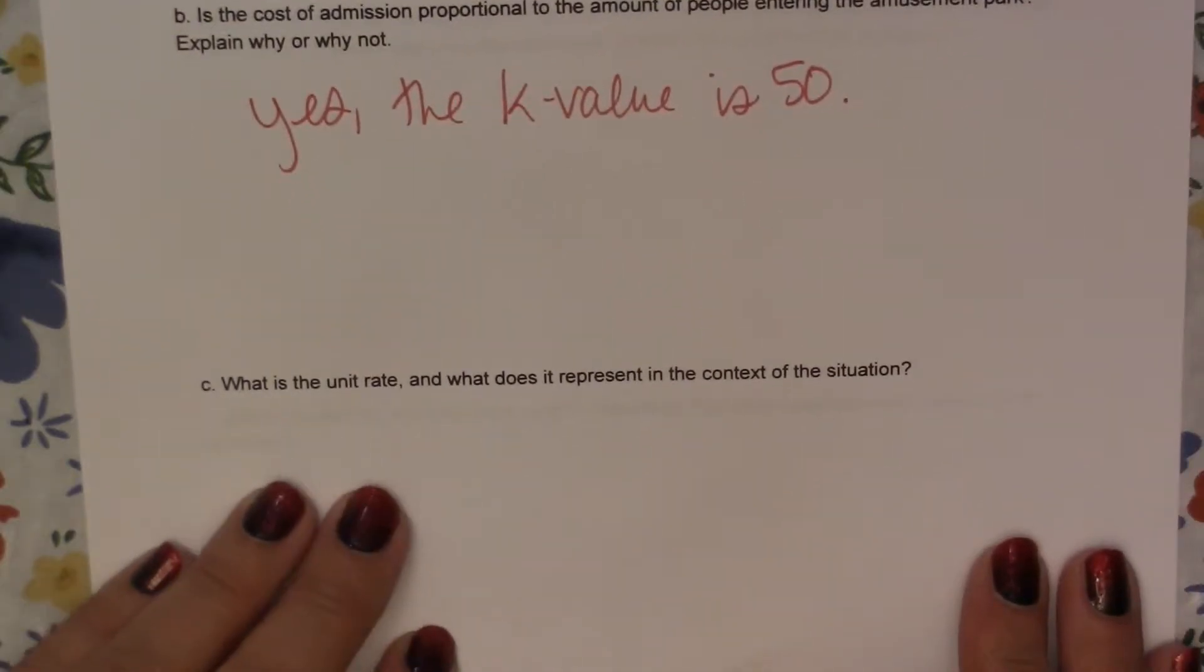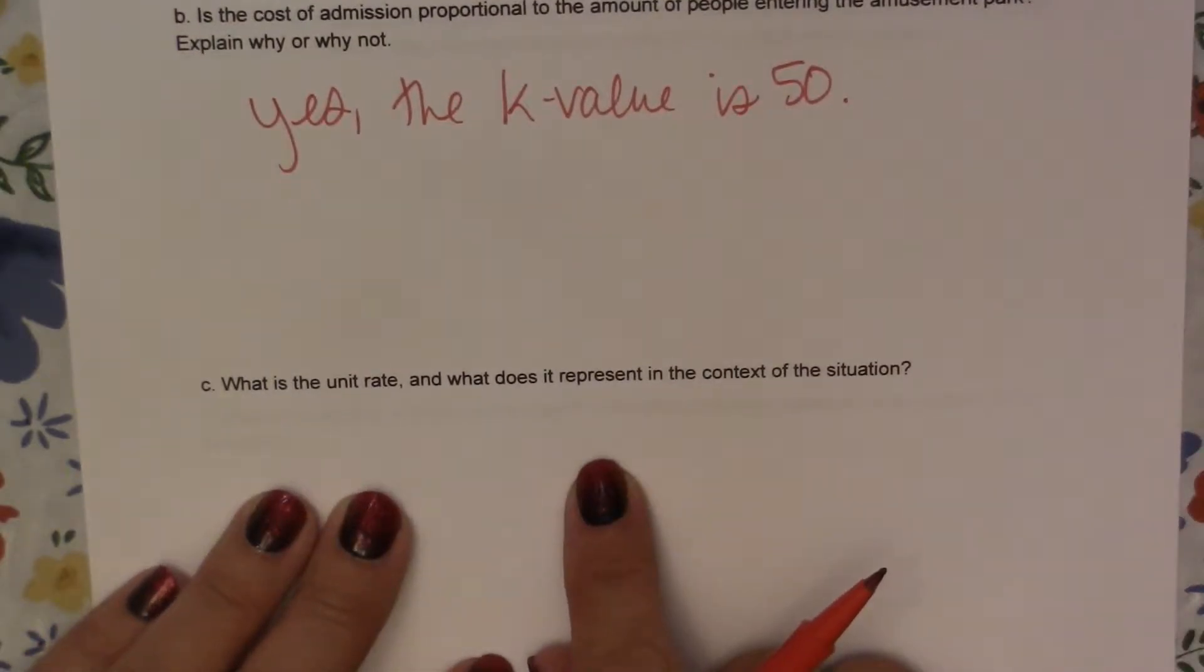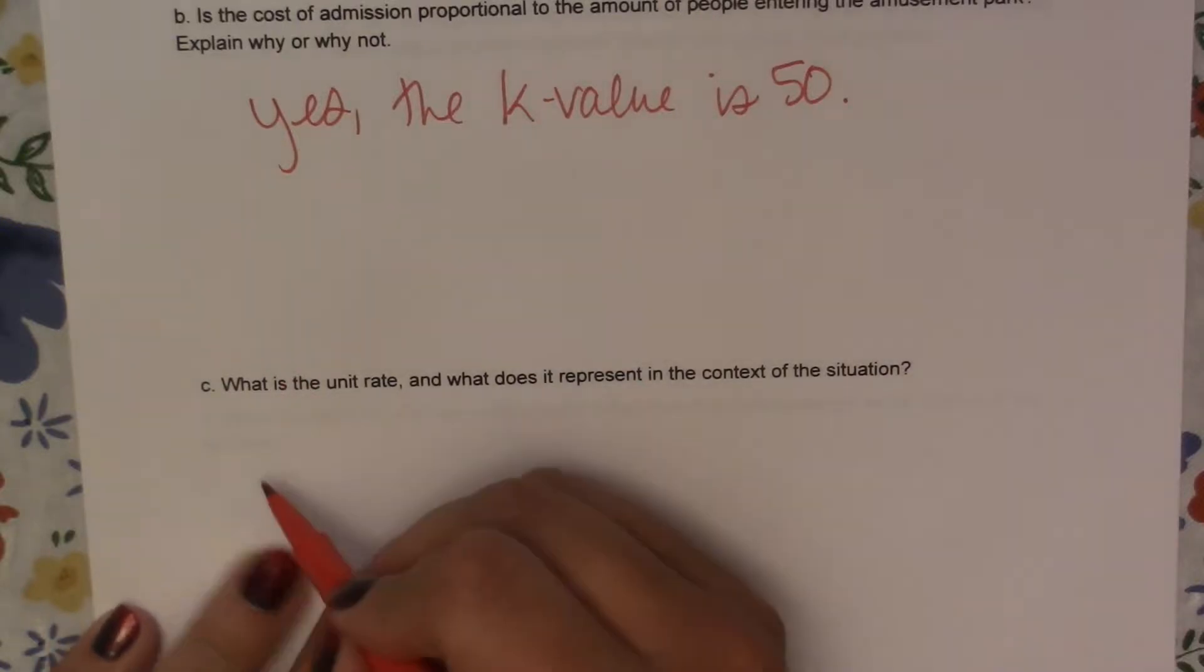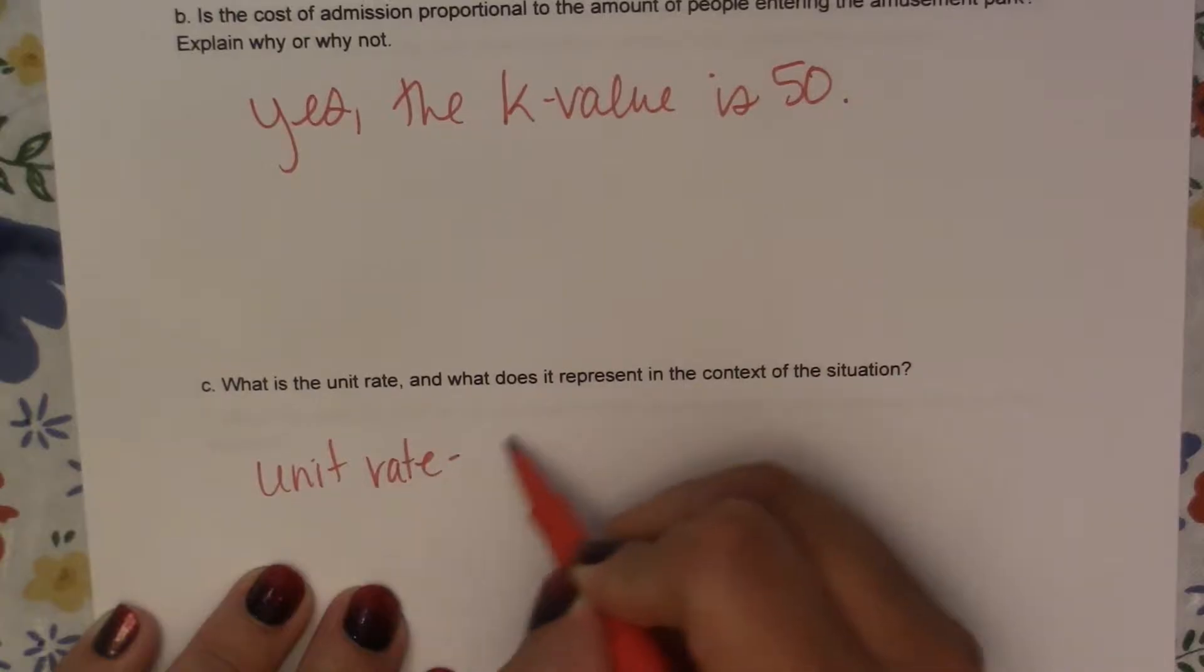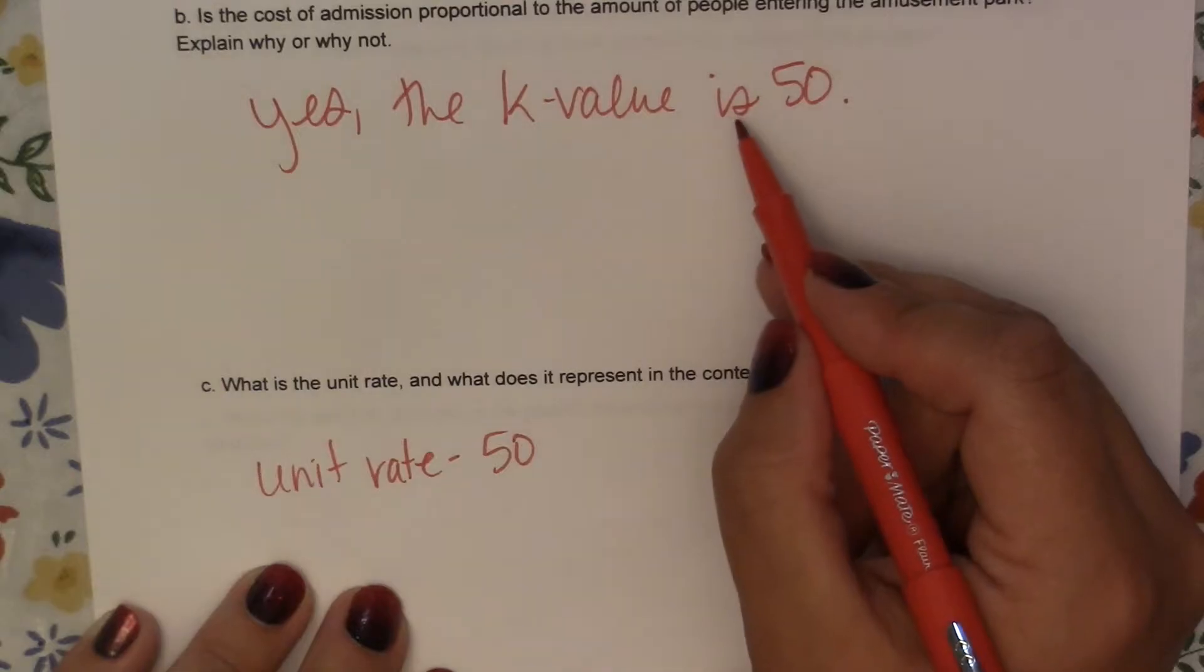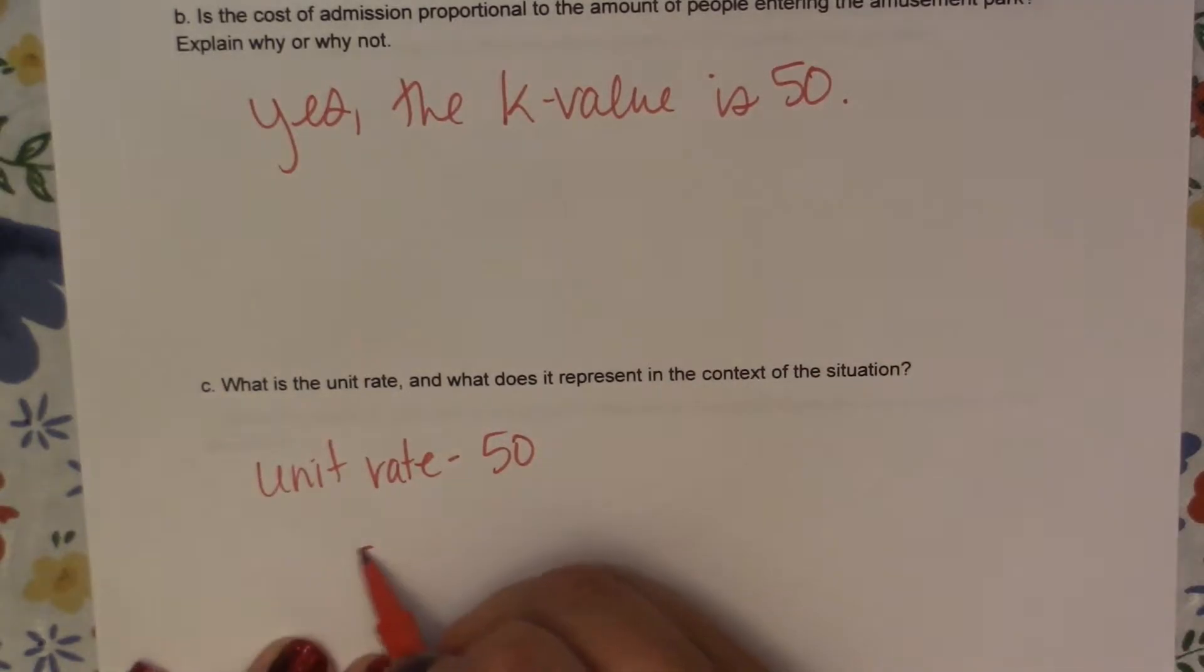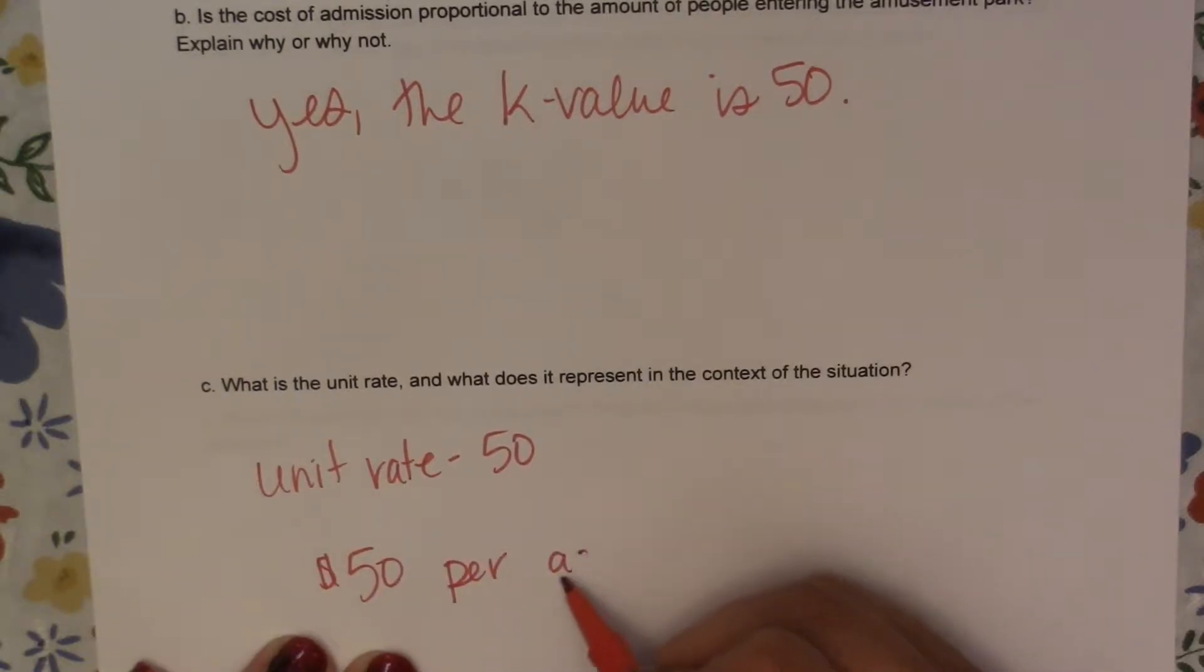Okay, let's see what is the unit rate and what does it represent in the context of the situation. So our unit rate is 50, which we found in the problem above. And this means that it is $50 per admission, or you could say per person.